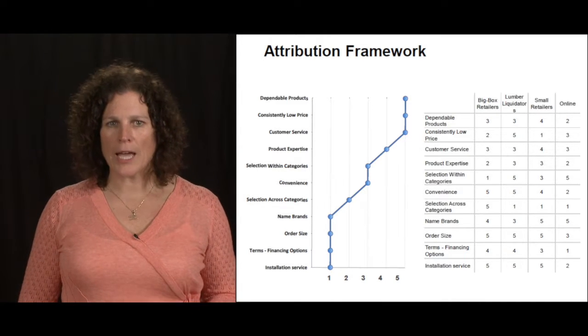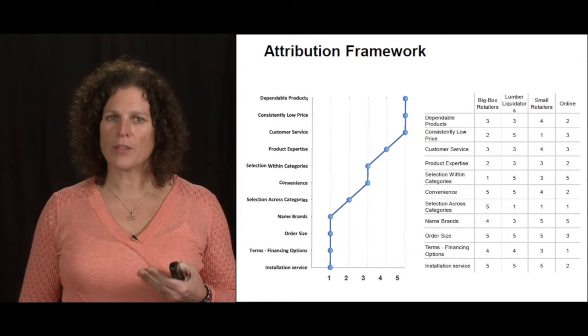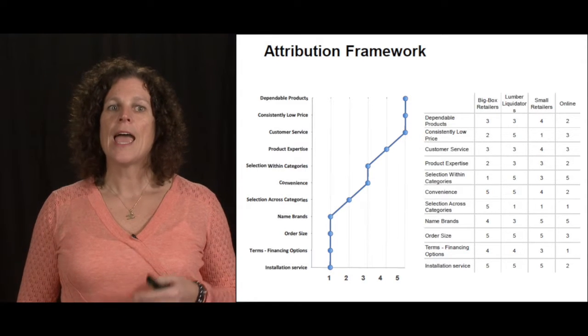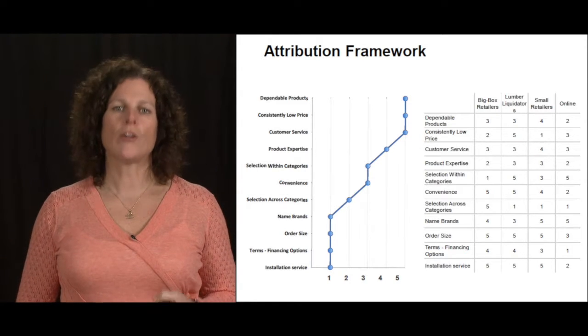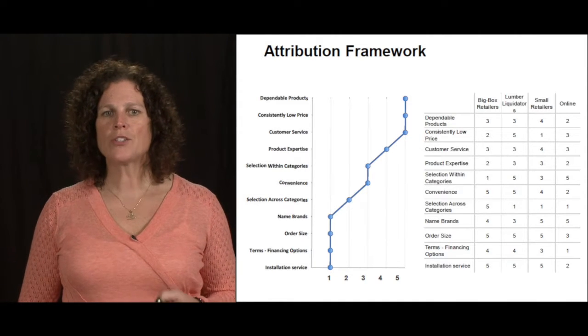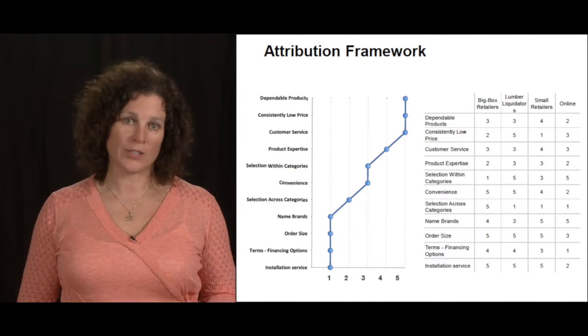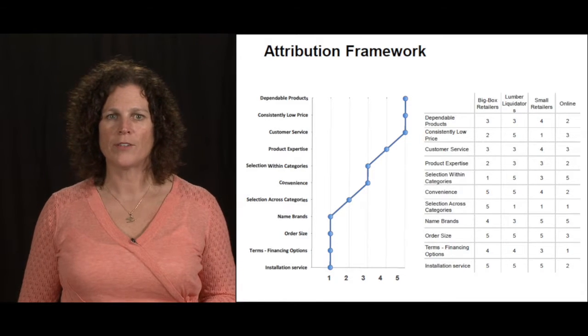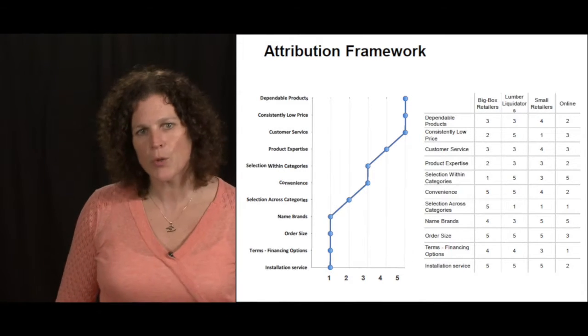After we come up with the attributes, we come up with the companies we're competing against, as well as our own company. We want to rank each of the competitors as well as ourselves on a scale of one to five. We want to do this how we're doing today.